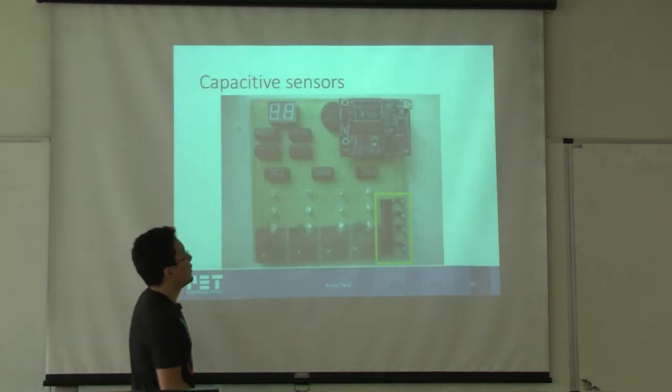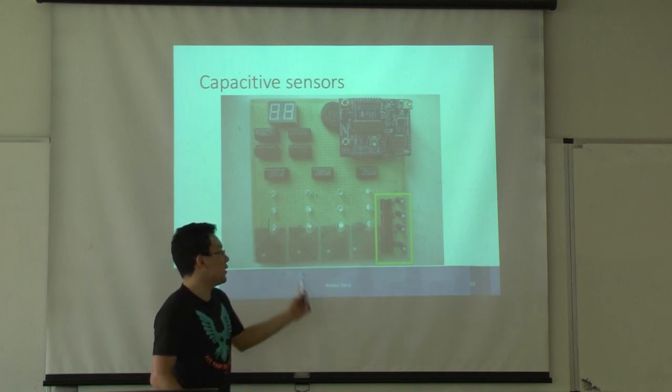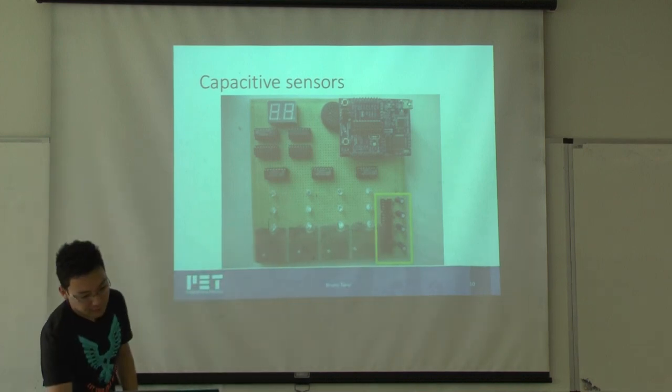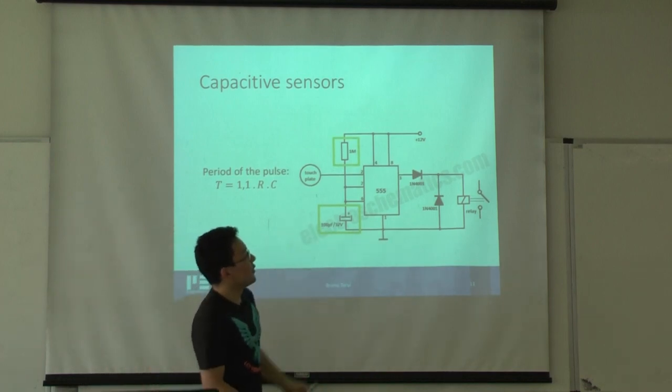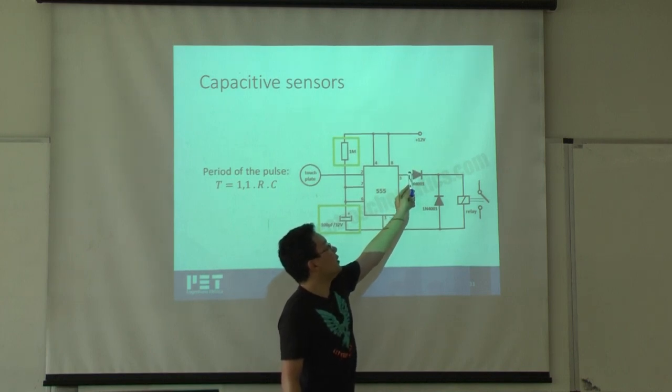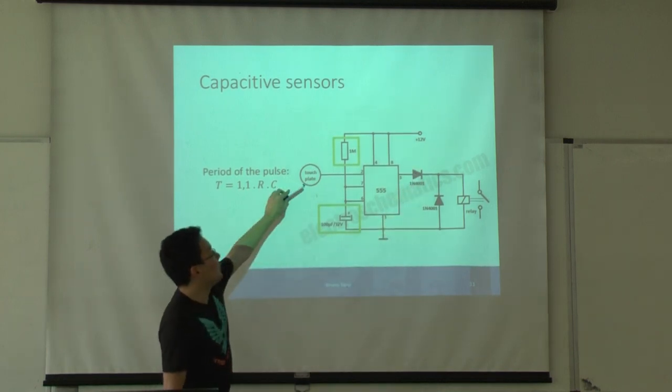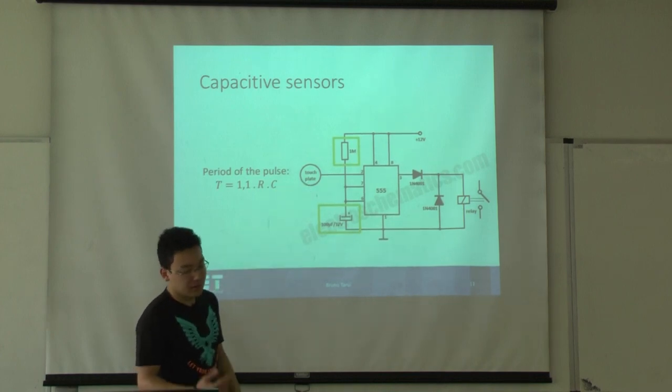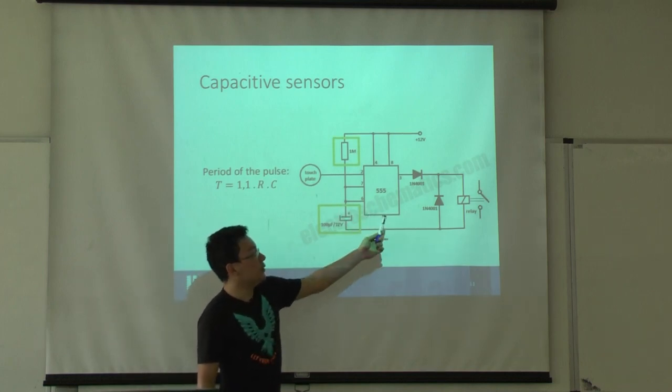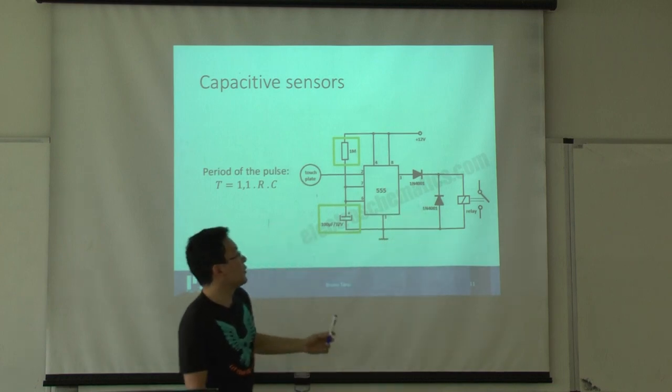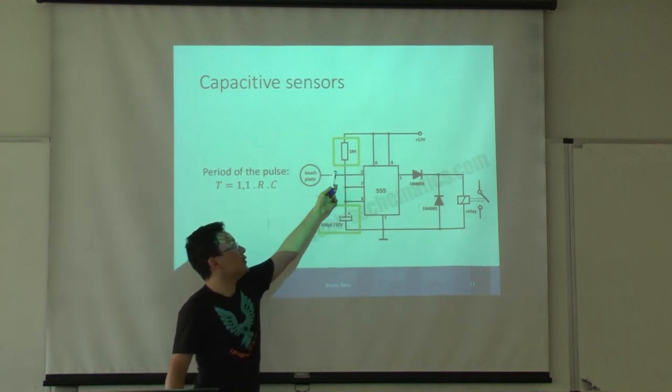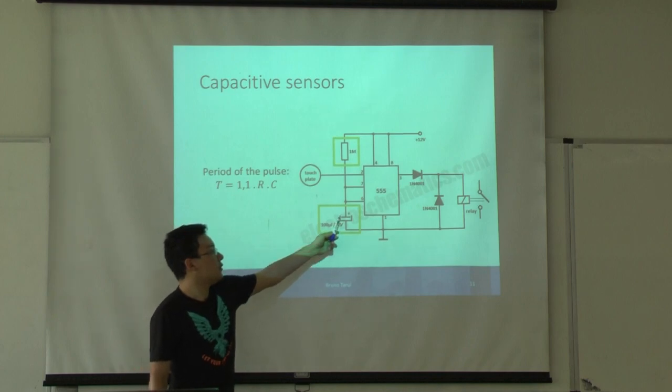All the capacitive sensors that I use in my project are just touch plates, some 555 timers, a couple of resistors, and capacitors. This schematic of the circuit is a very simple circuit. You can ignore this part here. The only part that matters is until the output pin here. When you vary the capacitance of the touch plate by touching with your finger or some kind of metal, the 555 will send a pulse in their output to the microcontroller. The pulse is given by this equation here, where they are representing the value of the resistance of this resistor and C the capacitance of this capacitor here.